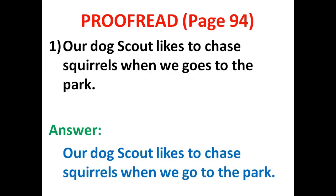Number one, page 94: 'Our dog Scout likes to chase squirrels when we goes to the park.' You cannot say 'we goes' — there should not be any ES in the verb if the subject is we. That is the main mistake in the sentence. The correct answer is: Our dog Scout likes to chase squirrels when we go to the park.